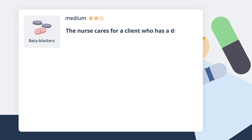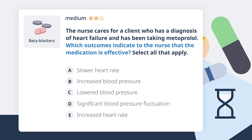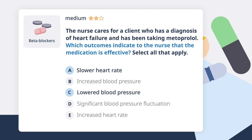The nurse cares for a client with a diagnosis of heart failure who has been taking metoprolol. Which outcomes indicate to the nurse that the medication is effective? Select all that apply. A beta blocker such as metoprolol slows down the heart rate, improving blood flow throughout the body. This medication improves the ejection fraction and decreases morbidity and mortality due to heart failure. When the heart rate is slowed, blood pressure is decreased. However, a client taking a beta blocker may experience a depressing effect with activities such as exercise, which would normally increase heart rate and blood pressure.